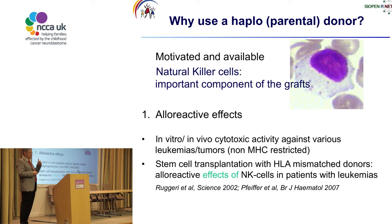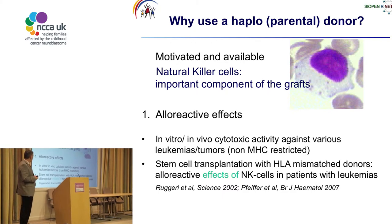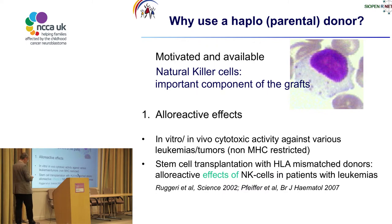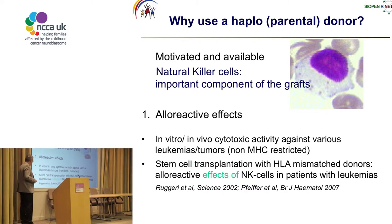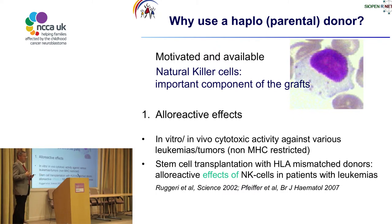Natural killer cells have, first, alloreactive effects in vitro and in vivo against neuroblastoma tumors and other tumors. And second, after stem cell transplantation with such HLA-mismatched haplo-identical donors, such alloreactive effects of NK cells in patients have already been proven — however, in leukemia patients.